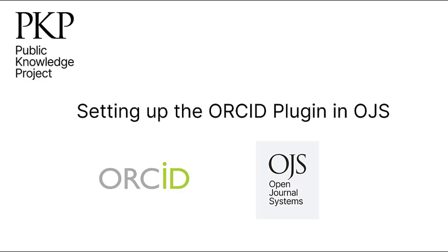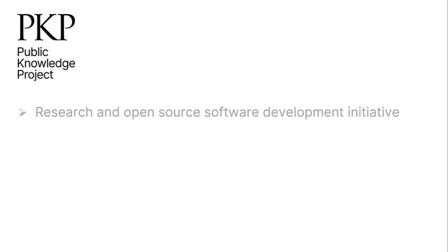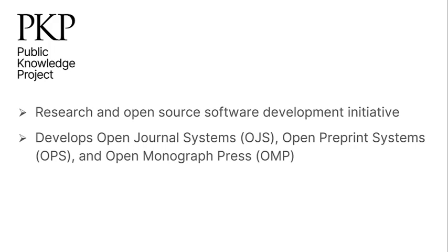Welcome to this video on setting up the ORCID plugin in Open Journal Systems. I'm Kate Shuttleworth with the Public Knowledge Project. The Public Knowledge Project, or PKP, is a research and open source software development initiative developing software for scholarly publishing. PKP develops Open Journal Systems, Open Preprint Systems, and Open Monograph Press.